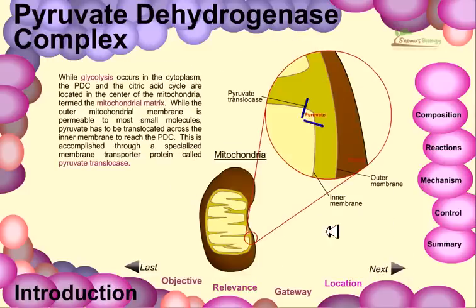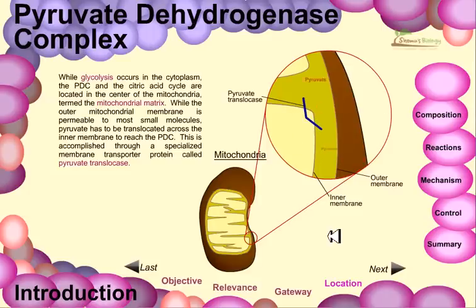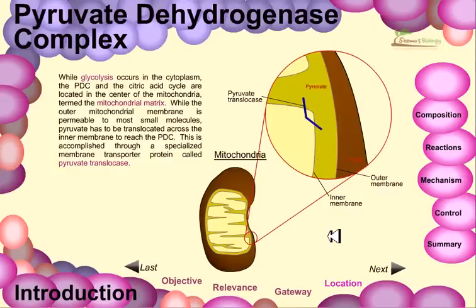While glycolysis occurs in the cytoplasm, the PDC and the citric acid cycle are located in the center of the mitochondria, termed the mitochondrial matrix. While the outer membrane of the mitochondria is permeable to most small molecules, pyruvate has to be translocated across the inner membrane of the mitochondria to reach the PDC. This is accomplished through a specialized membrane transport protein called the pyruvate translocase.